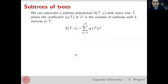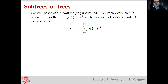Based on this definition, we can associate a polynomial with every tree, which we call the subtree polynomial. The coefficient s_k of T is simply the number of subtrees that have exactly k vertices. This polynomial encodes the family of subtrees of T and tells us exactly how many of each size there are.